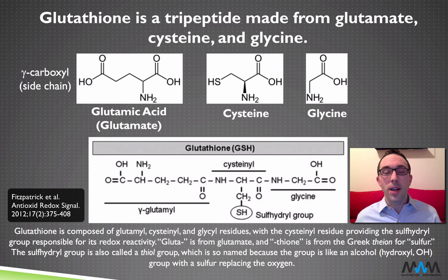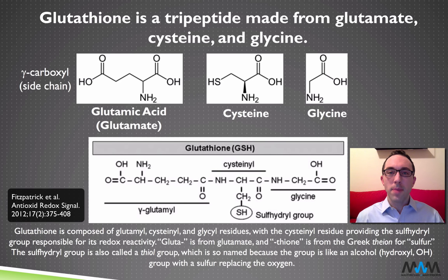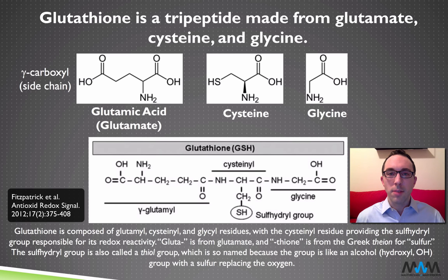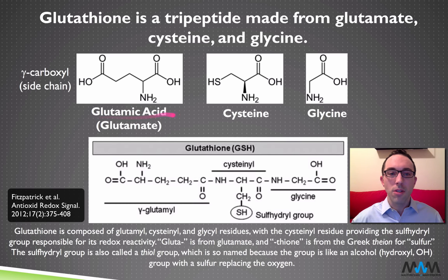So what is glutathione? Well, glutathione is a tripeptide, meaning it's made from three amino acids. We get amino acids from dietary protein, so glutathione is ultimately derived from dietary protein. The three amino acids are shown on the screen and they are glutamic acid or glutamate, cysteine, and glycine.